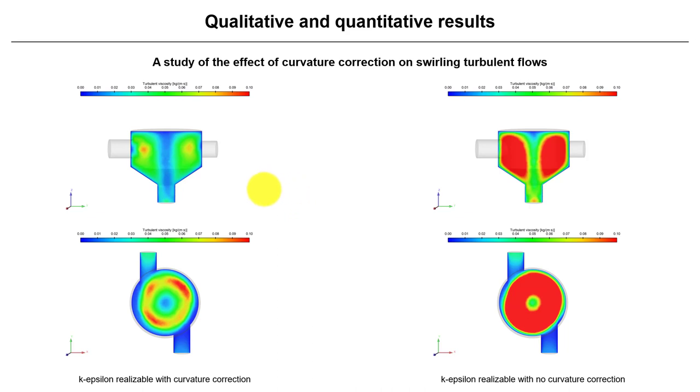And here we compare a few models. First, we compare the K-epsilon realizable which is the one that also takes into account some curvature effects. And we have it with curvature correction and no curvature correction. See what is happening here, when you disable the curvature correction, you are producing too much turbulent viscosity and that can damp your motion. That can be a problem.